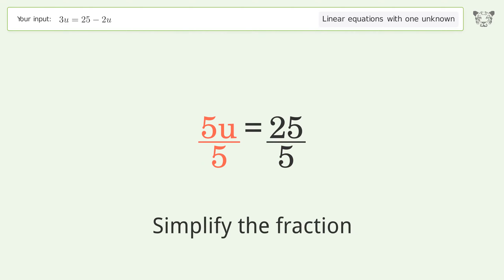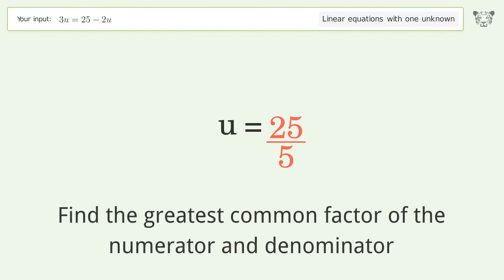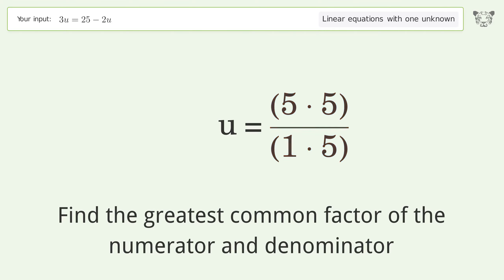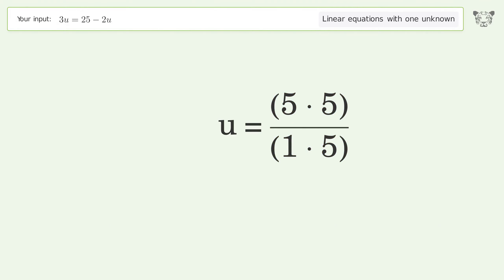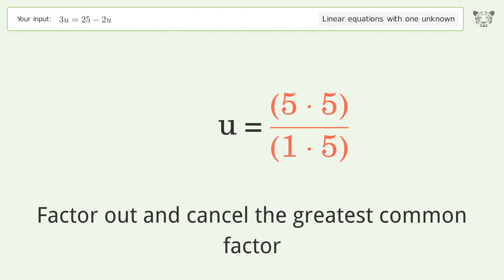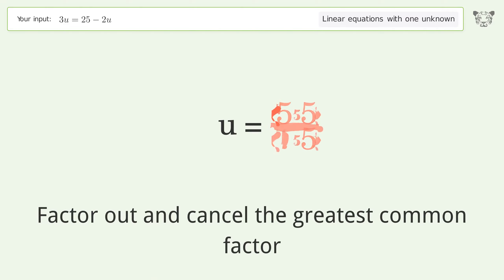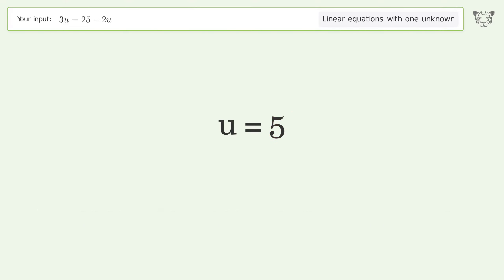Simplify the fraction. Find the greatest common factor of the numerator and denominator. Factor out and cancel the greatest common factor. And so the final result is U equals 5.